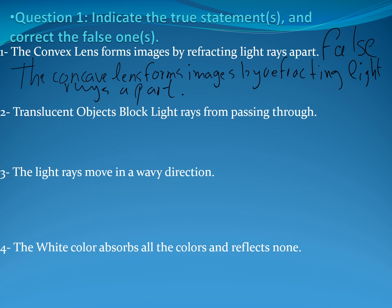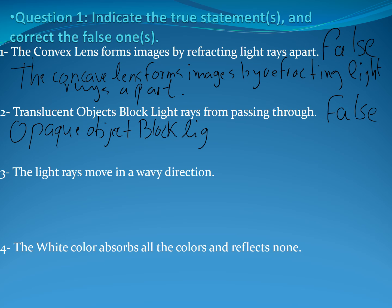Moving to number two. Adam: translucent objects block light rays from passing through. True or false? It's false. The correction: opaque objects block light rays from passing through. Excellent.